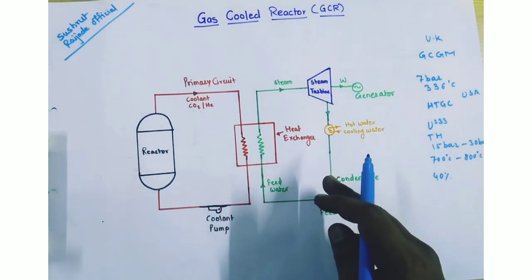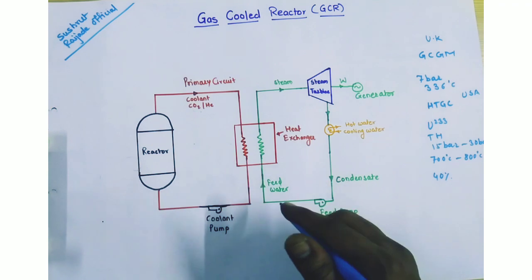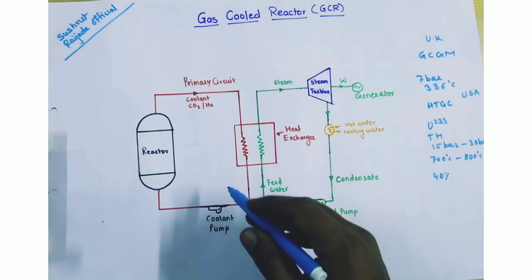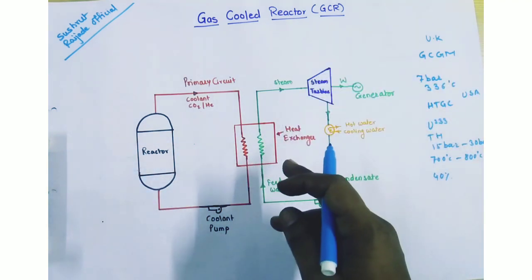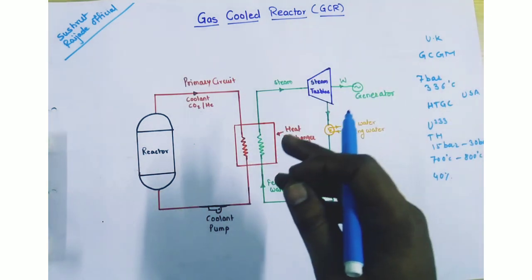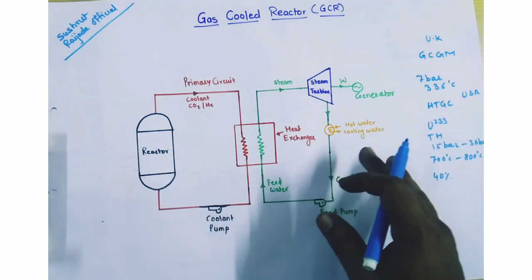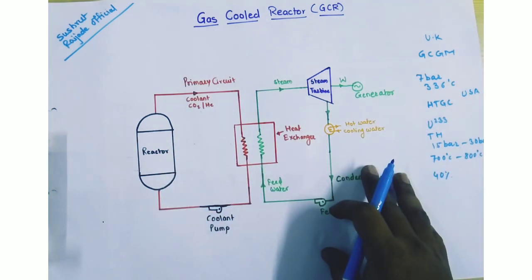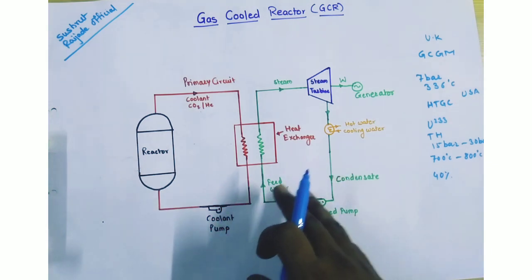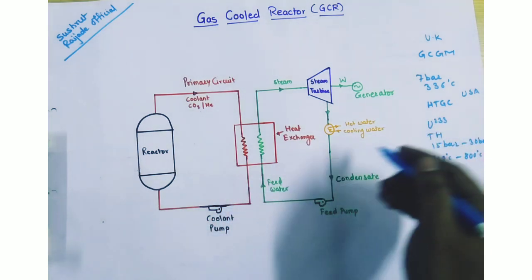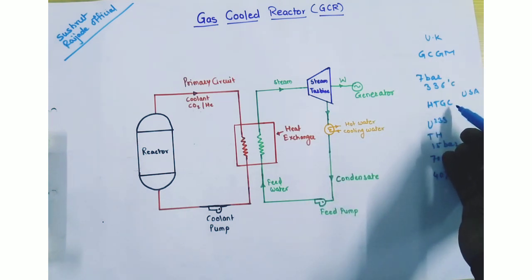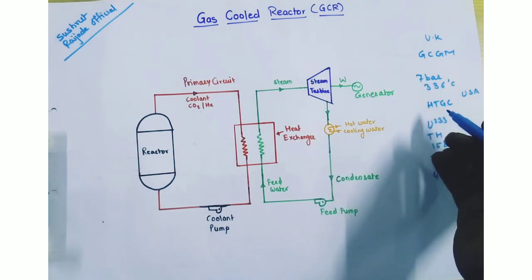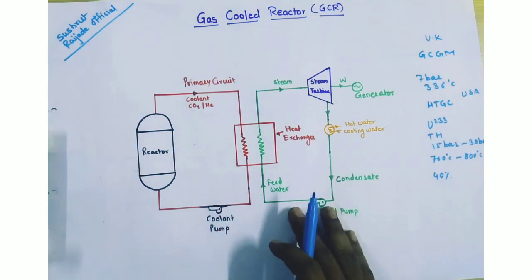Third, a large amount of fuel loading is required. Fourth, if helium is used in the case of HTGC, leakage is a major problem in the gas cooled reactor.